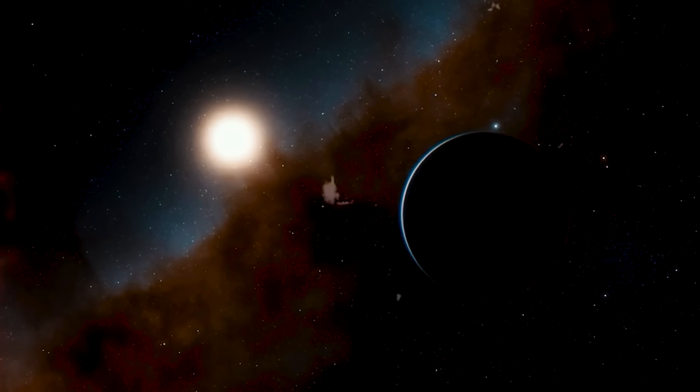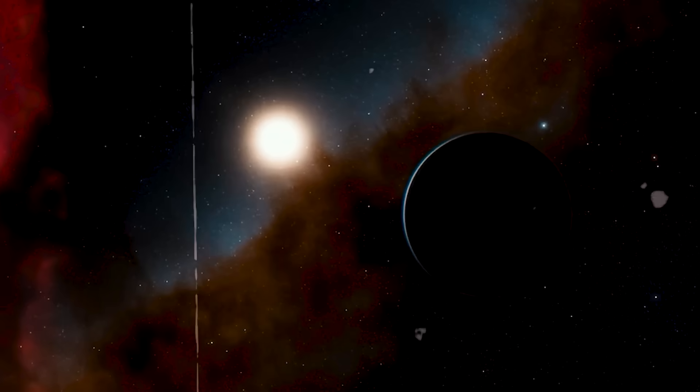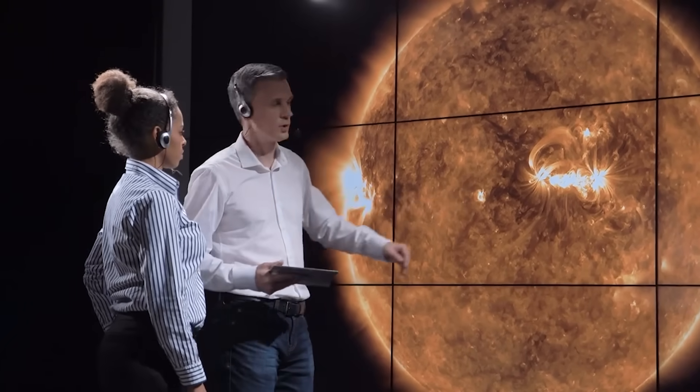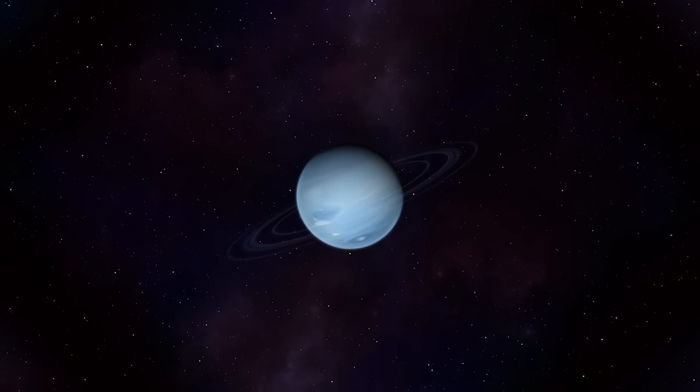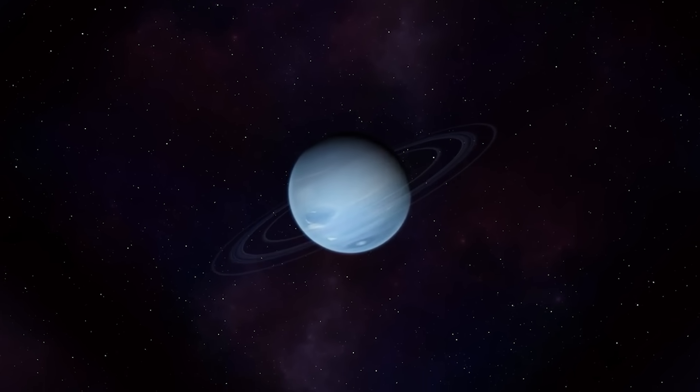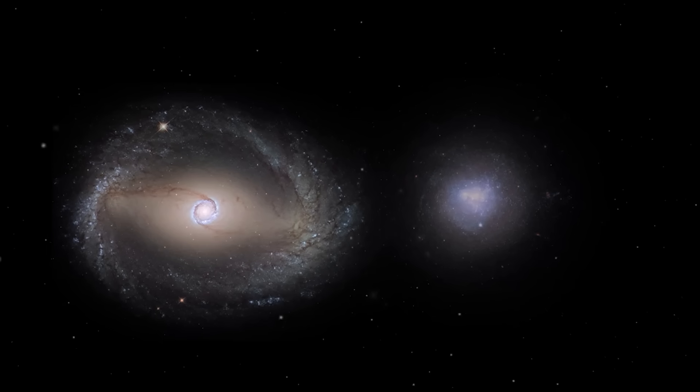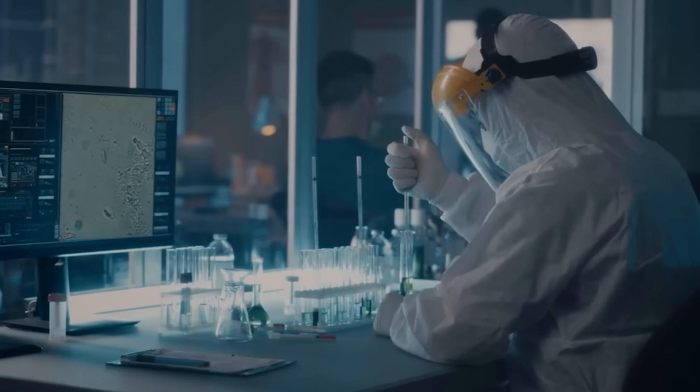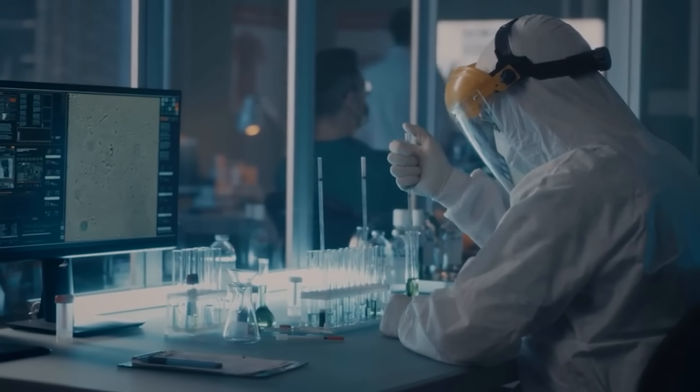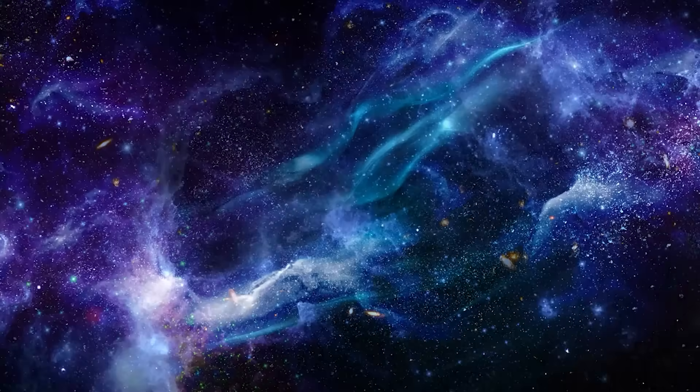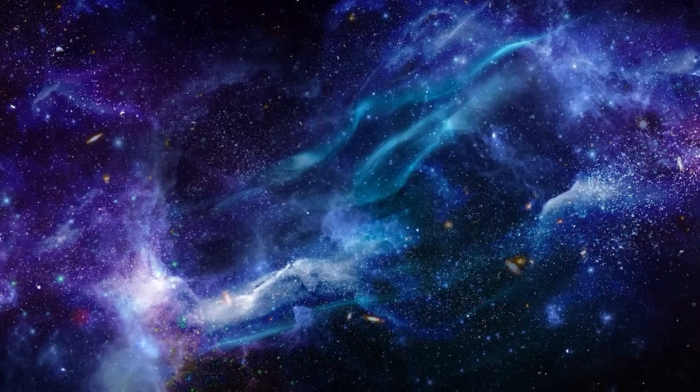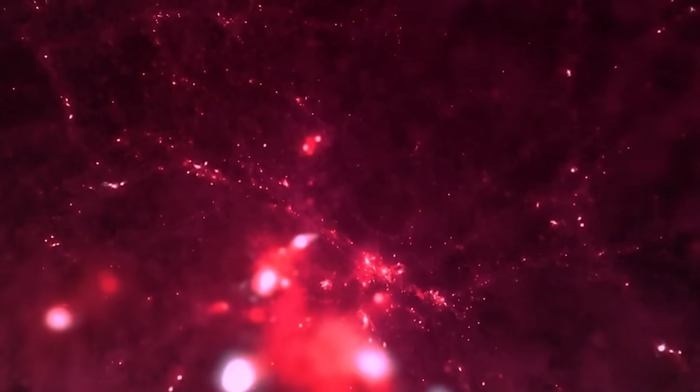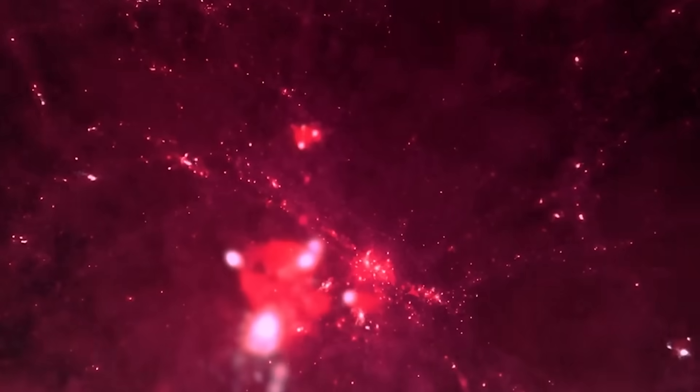The images arrived in staggered bursts, each carefully filtered and assembled from the deep infrared data Webb had gathered over the past several months. One particular image commanded immediate attention. A region of space previously catalogued as empty, or nearly so, revealed an intricate lattice of filaments glowing faintly in the mid-infrared spectrum. These thread-like structures sprawled across tens of millions of light-years, connecting distant galactic clusters in an unimaginably vast cosmic web.